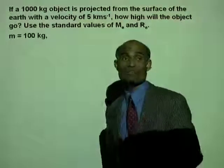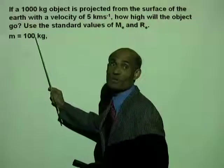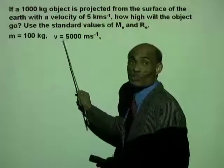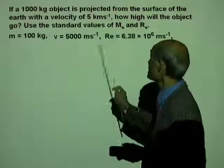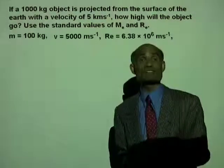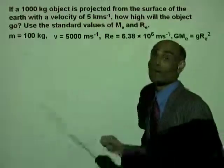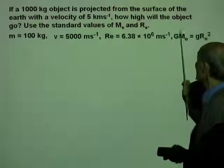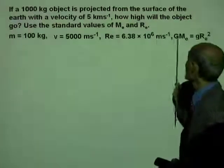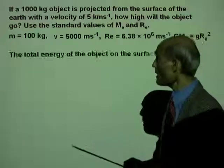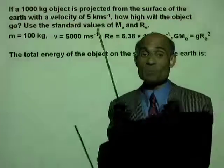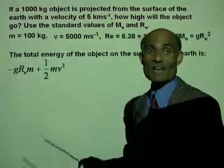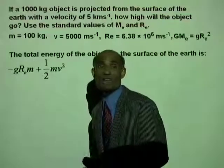The mass of the object is 1000 kg. The initial velocity of projection is 5000 m/s. The radius of the Earth is 6.38 × 10⁶ m. GM_E can be replaced by gR_E². The total energy is potential energy plus kinetic energy. The potential energy on the surface is − gR_E m (after substituting GM_E = gR_E² and simplifying).